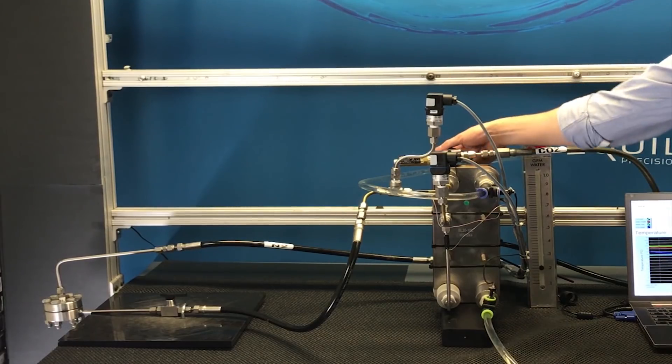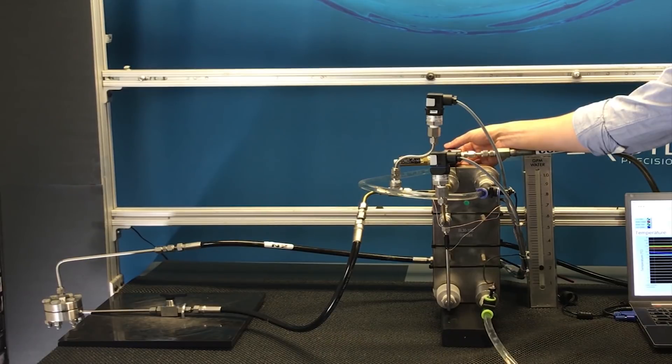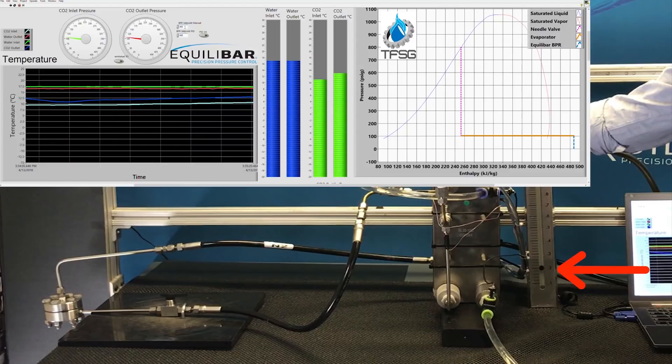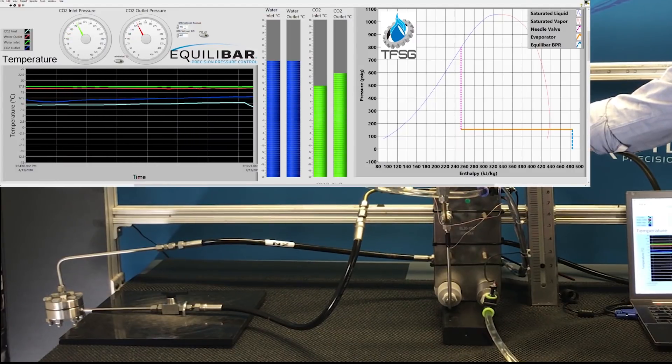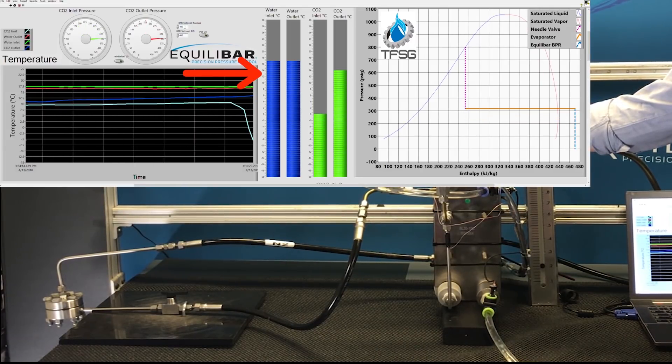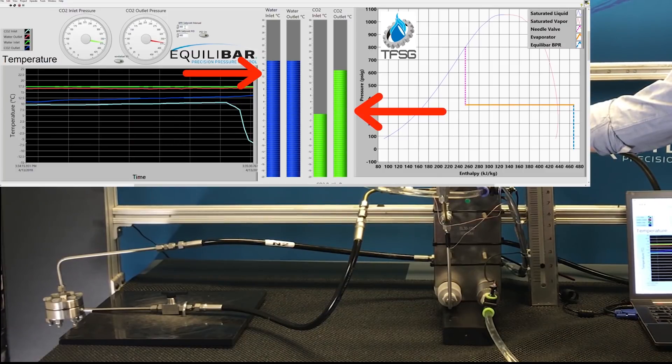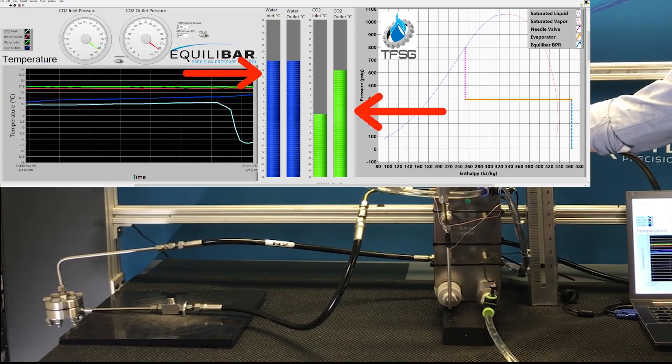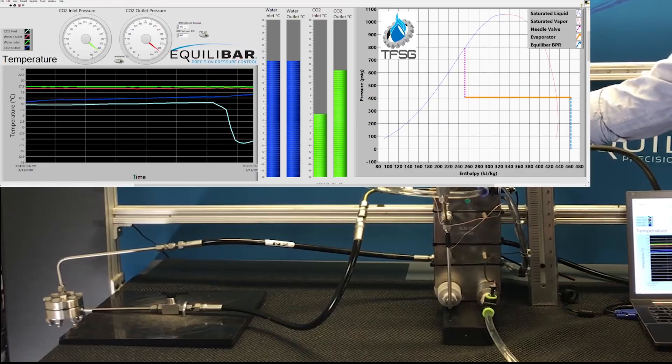As the needle valve is open, CO2 flows into the system and the heat exchange process in the evaporator begins. The heat load in this run is set to 0.2 GPM. The overlay shows two graphics. On the left are temperature plots and bar graphs showing the inlet and outlet temperatures of the water which is our heat load and the CO2 process fluid. Green represents CO2 temperature and blue represents the heat load temperature.